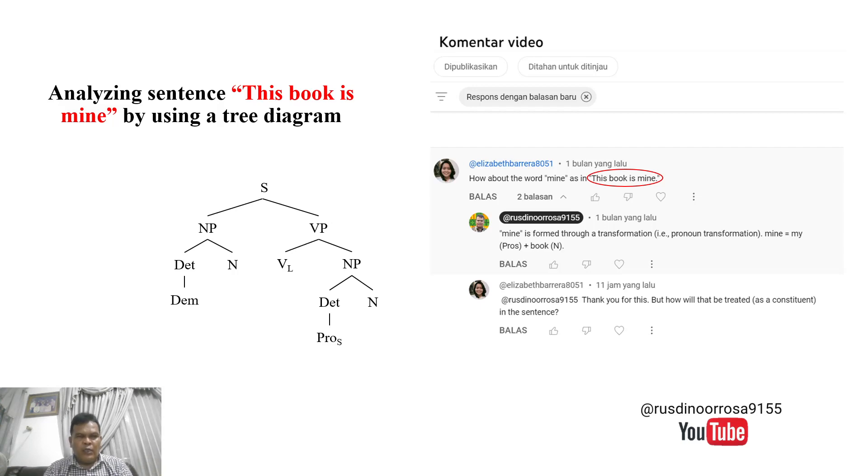In order to analyze 'this book is mine,' we need to apply a transformational rule called possessive pronoun transformation. Before coming to that transformation, we need to label the element of each constituent. For the demonstrative, we have 'this,' the noun is 'book,' and the linking verb is 'is.'